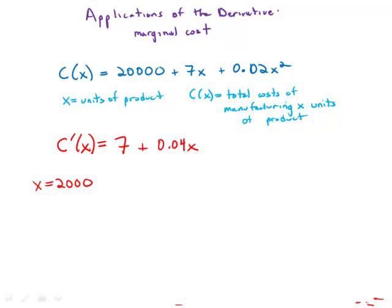But we might also care about the marginal cost, C'(2000). If we plug in, we get $87. So in other words, if they were making 2,000 units, it would cost approximately $87 for each additional unit they wanted to make from that point onward. And that is an example of the use of the derivative from economics.